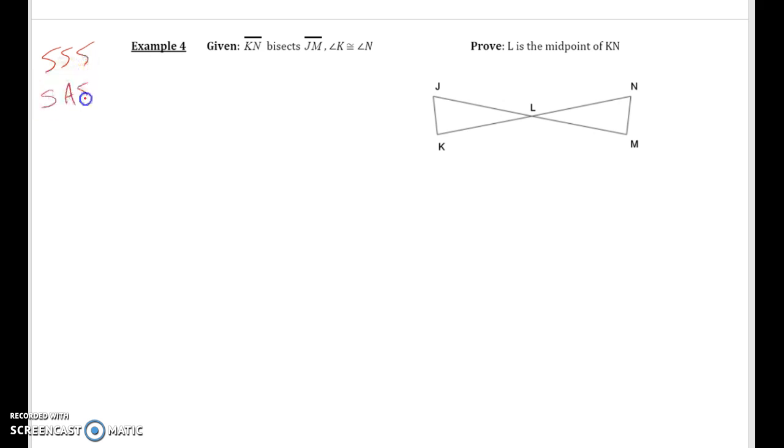Side-side-side, side-angle-side, angle-side-angle, angle-angle-side, and hypotenuse leg. Immediately looking at this diagram and the given, I'm not given any perpendicular information. These triangles do not look like right triangles, so I'm going to cross out hypotenuse leg right off the bat.